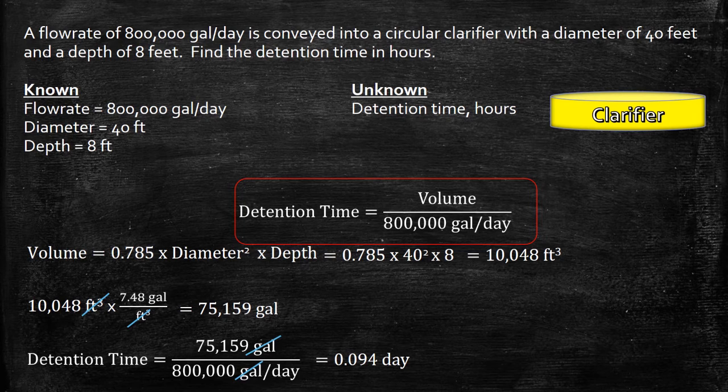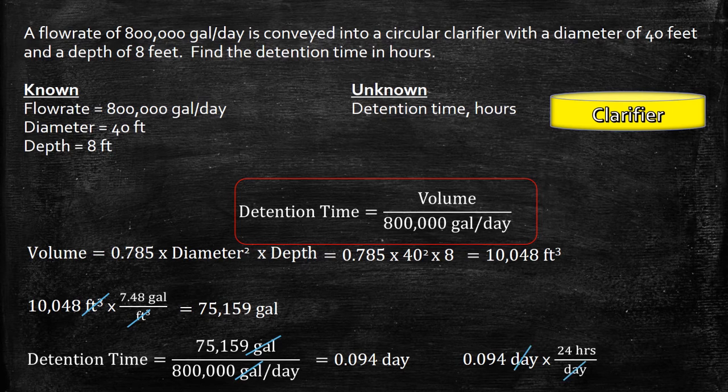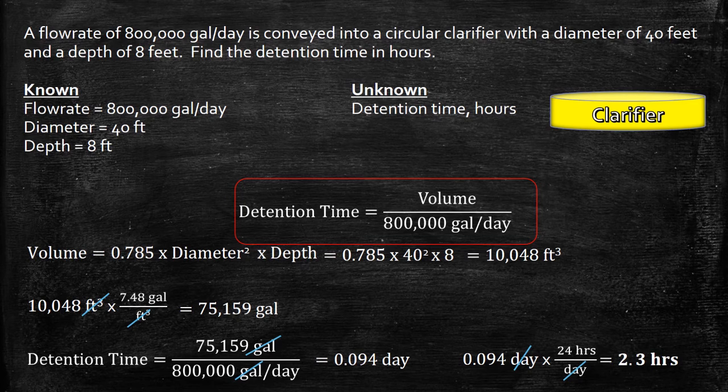So let's make that conversion one last step. 0.094 day multiplied by the conversion factor, 24 hours divided by 1 day. The days cancel out. Using our calculator, we get 2.3 hours as the detention time of the circular clarifier.